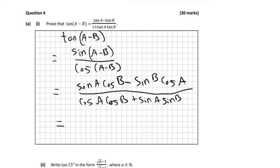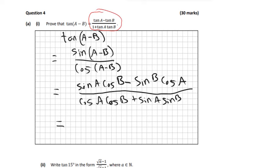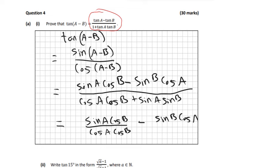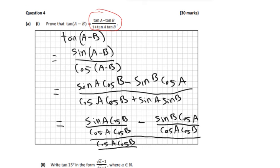So it's getting a little bit more complicated. The next step is we're going to divide everything by cos A cos B. The reason we're doing that is because we're getting back to the first step — we know that sin over cos is tan, so we have to get everything back into a tan. So dividing the numerator: sin A cos B over cos A cos B, minus sin B cos A over cos A cos B. And in the denominator, cos A cos B over cos A cos B becomes 1.